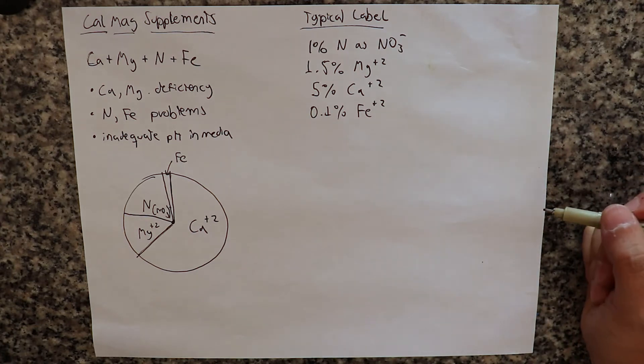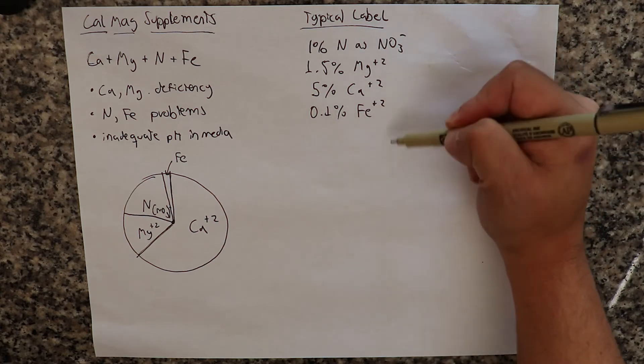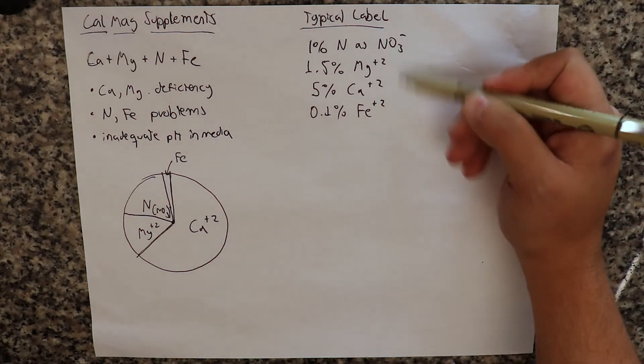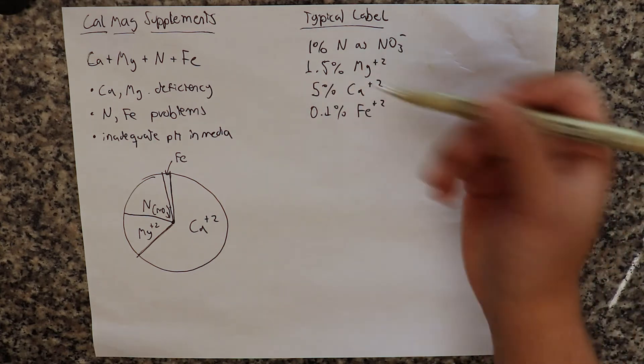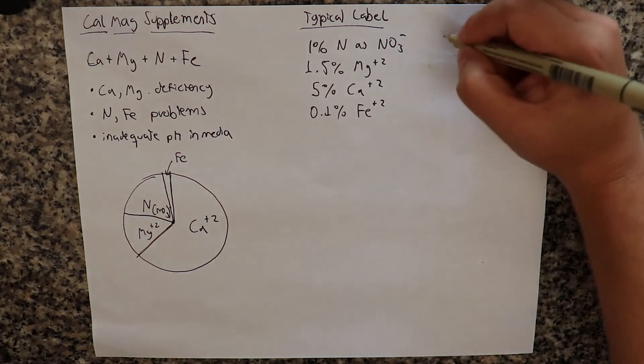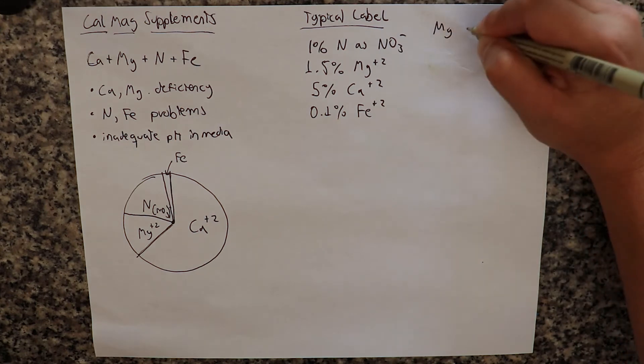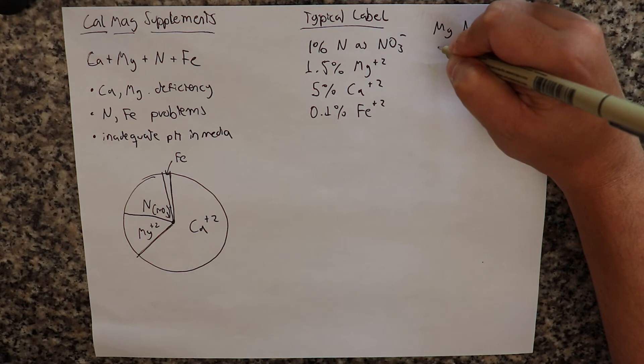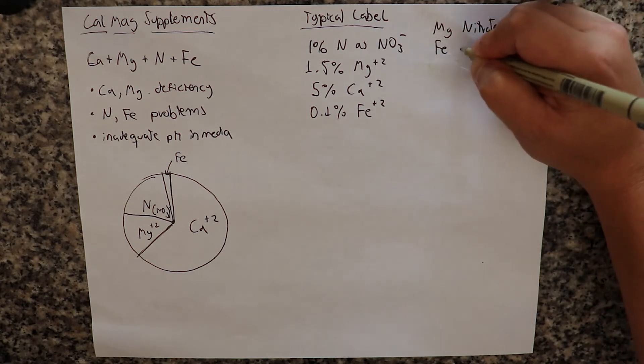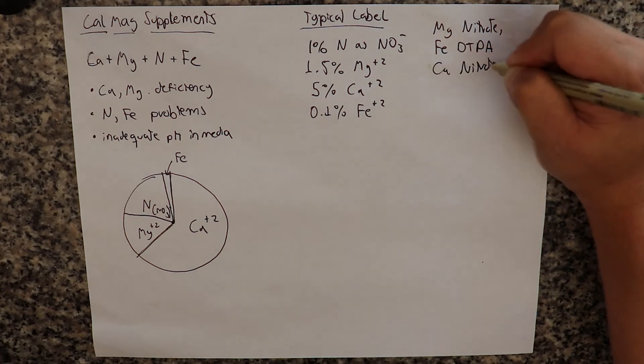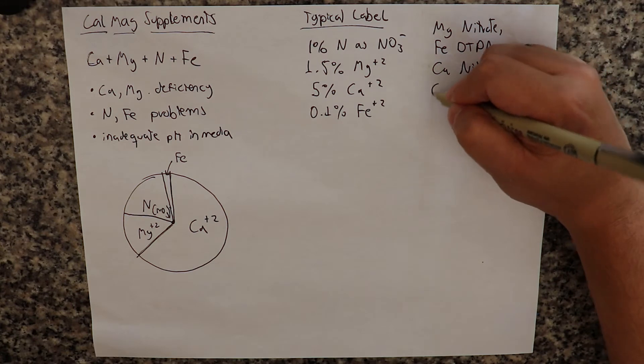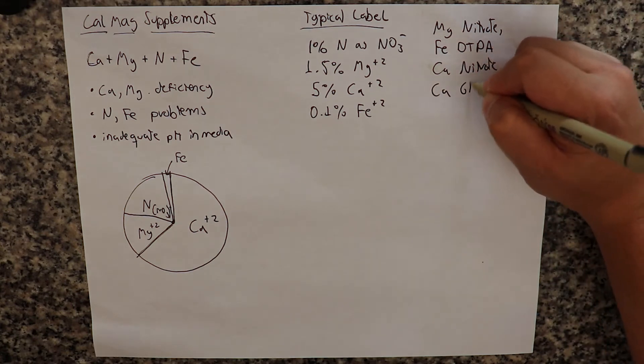Now, it is interesting to note that if you look at the things that we have here, we have 1 anion and we have 3 cations. So how do you actually get a makeup like this? Manufacturers will usually tell us it's magnesium nitrate and an iron chelate, normally iron DTPA. It's calcium nitrate and perhaps some other thing like, for example, calcium gluconate.